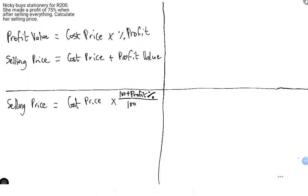Welcome back. There's a bit of a difference between this problem and the previous one we've done. With the previous one we were looking at the percentage profit — or profit percentage, same thing. Now we're looking for something else. The question says: Nikki buys stationery for 200 rands and made a profit of 75 percent after selling everything. Calculate her selling price.